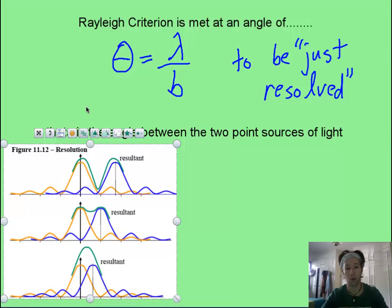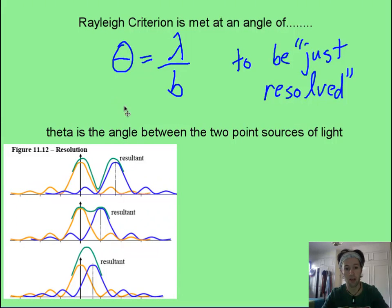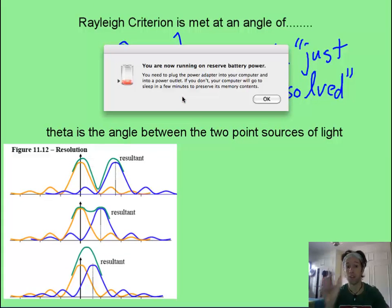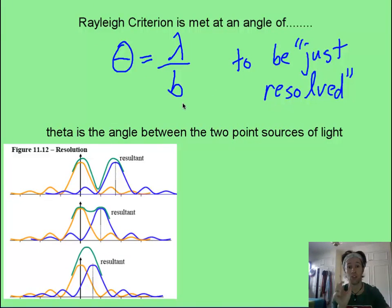The actual angle at which all of this is going to happen, for just resolved, is what we have here, where theta is equal to lambda, which is the wavelength, divided by b, which is the slit width.